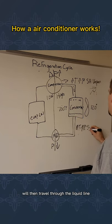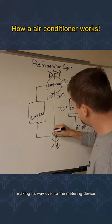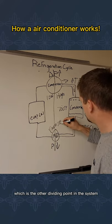subcooled liquid. Subcooled liquid will then travel through the liquid line, making its way over to the metering device, which is the other dividing point in the system.